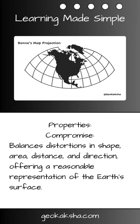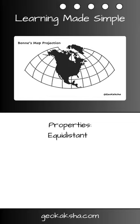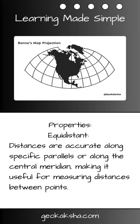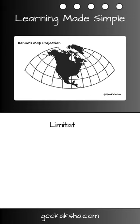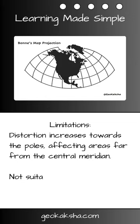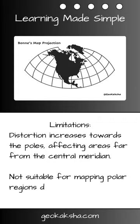This makes it ideal for a variety of mapping purposes where a balance is needed between these factors. And thirdly, it is an equidistant map projection. Distances are accurate along specific parallels or along the central meridian, making it valuable for measuring distances between points. But, like any other map projection, Born's projection has its limitations. Distortion increases towards the poles, affecting areas far from the central meridian, making it unsuitable for mapping polar regions.